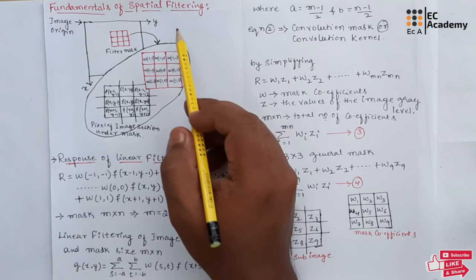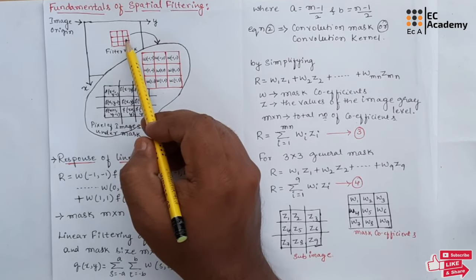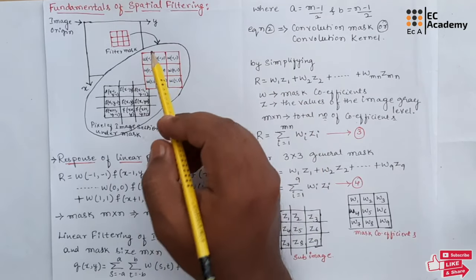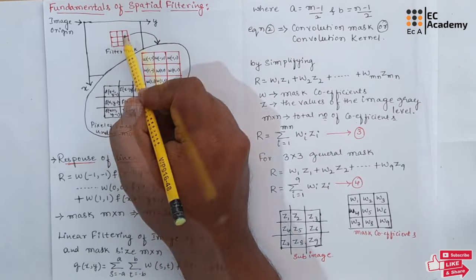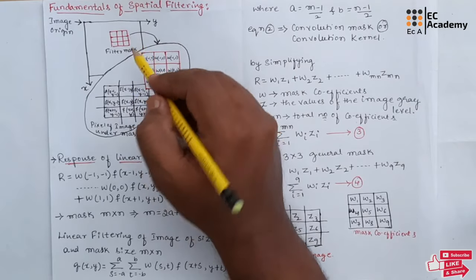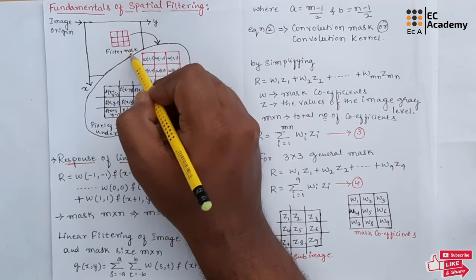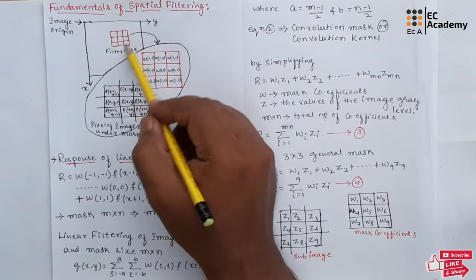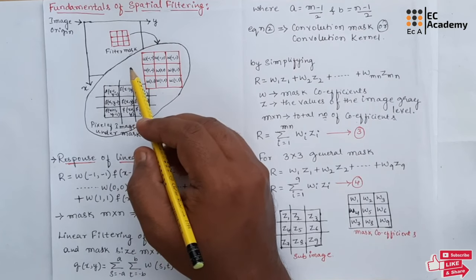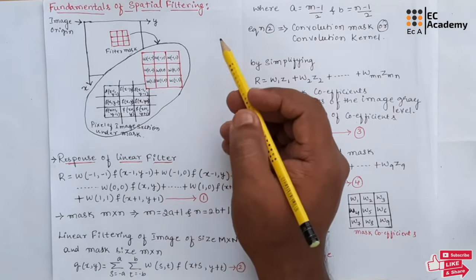Let us understand the mechanics of spatial filtering. The spatial filter consists of a neighborhood, which is typically a small rectangle, and a predefined operation that is performed on the image pixels using that neighborhood. The spatial mask or spatial filter has predefined operations that are performed on the image pixels with the help of the neighborhood in the mask. The filtering operation creates a new pixel. If the operation performed on the image pixels is linear, the filter is known as a linear spatial filter; otherwise, the filters are known as non-linear filters.